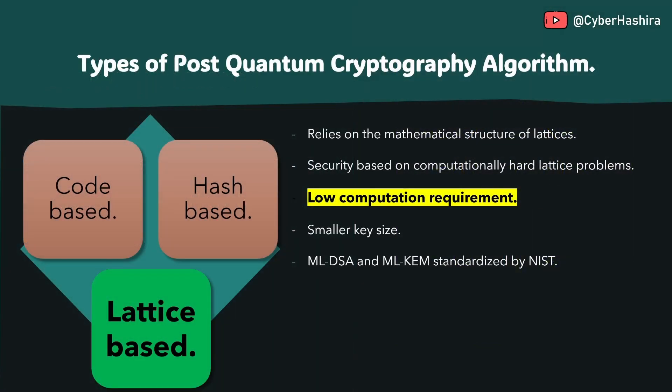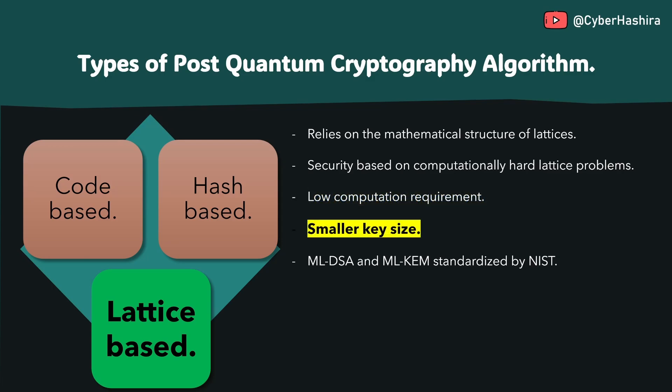A notable advantage of lattice-based algorithms is their computational efficiency. They enable faster key generation, encryption, and digital signing while requiring minimal computational resources. Another notable advantage is their relatively small key size. Compared to other PQC algorithms, lattice-based algorithms generally have the smallest key size. However, these keys are still significantly larger than those used in traditional algorithms such as RSA and ECDSA. But with our current computing power, this is not expected to pose any problem.